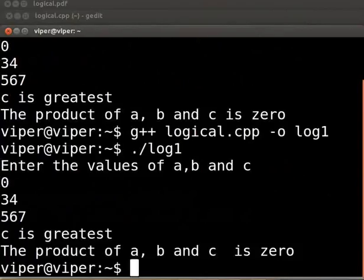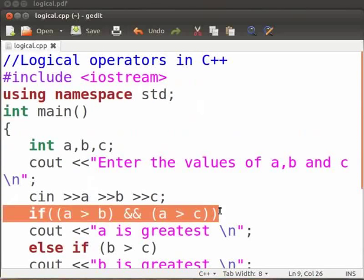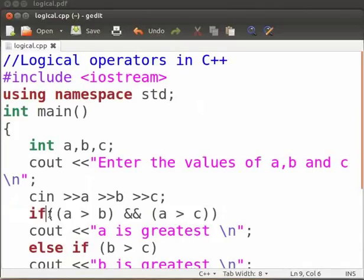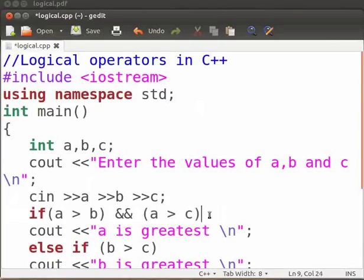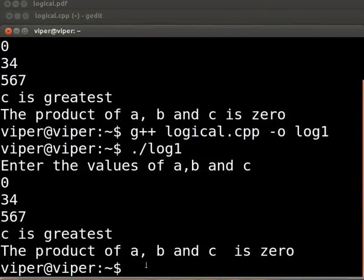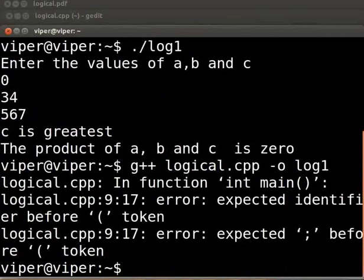Now, let us see an error which we can come across. Let us switch back to the editor. Suppose here we forgot the brackets. Delete this and this. Let us see what will happen. Save the program. Come back to the terminal. Compile and execute as before. We see the error.